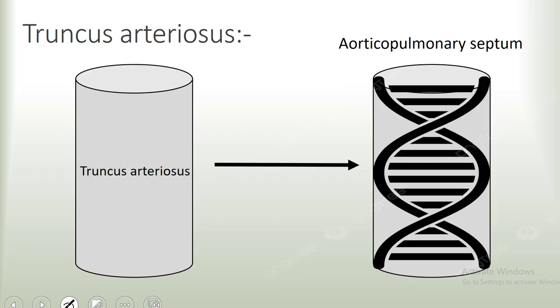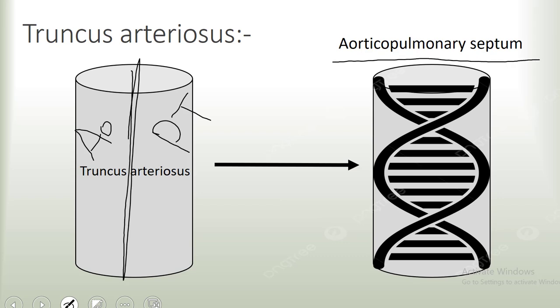But why does this happen? During embryological development, a main channel comes out of the heart called the truncus arteriosus. This truncus arteriosus actually develops a septum in the middle that divides it into two channels. One will become the aorta and the other will become the pulmonary trunk. This septum is referred to as the aorticopulmonary septum.